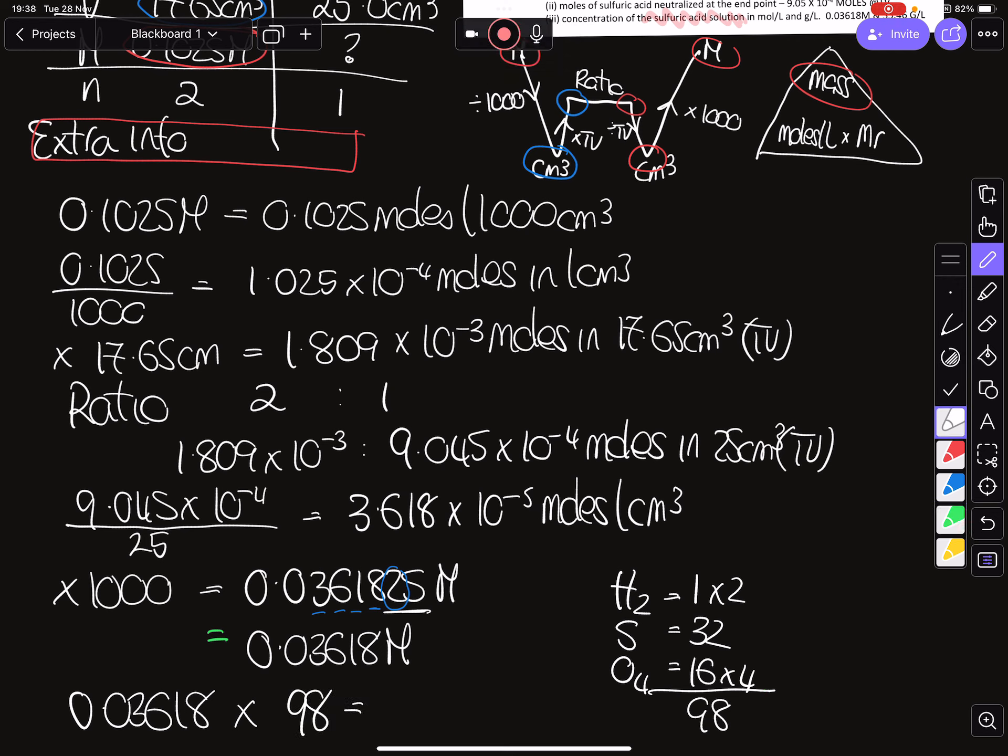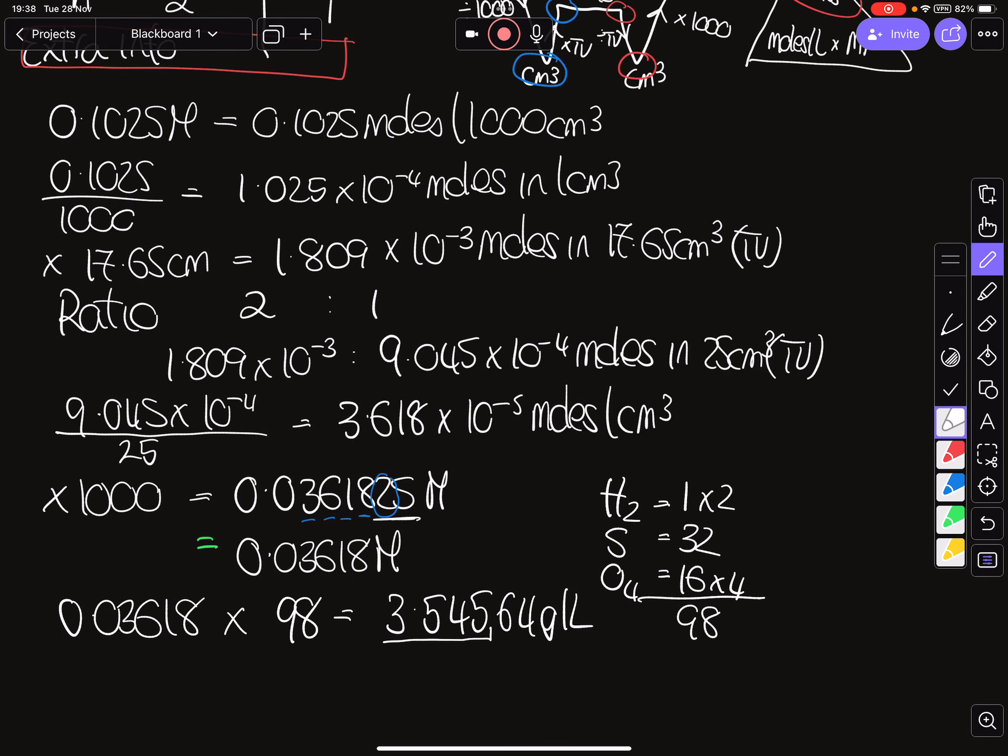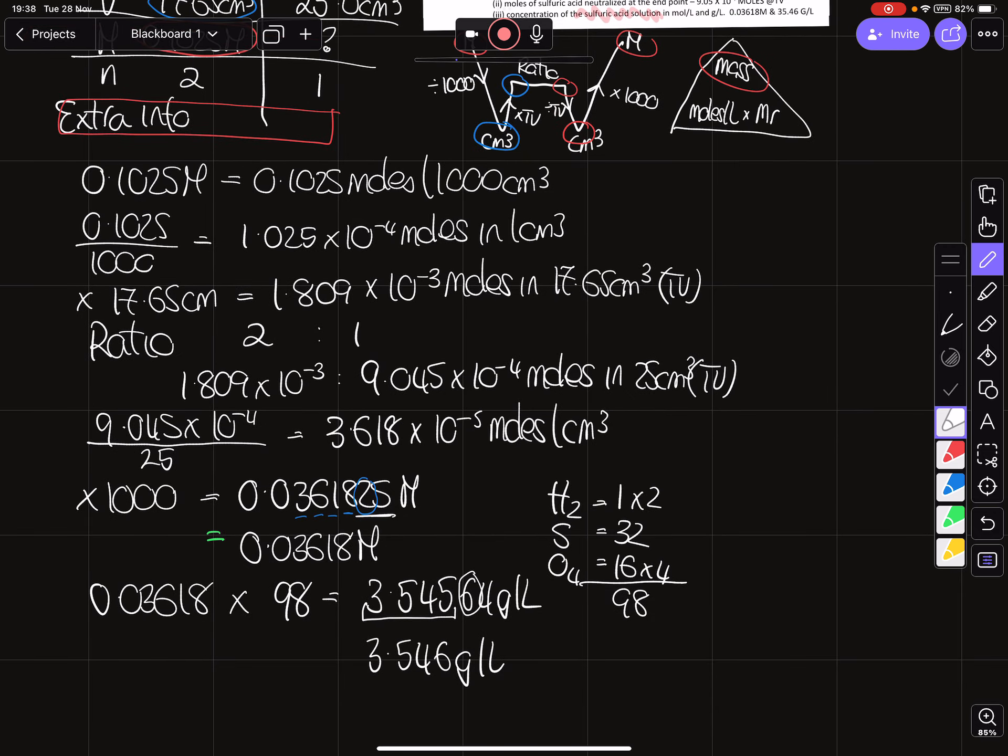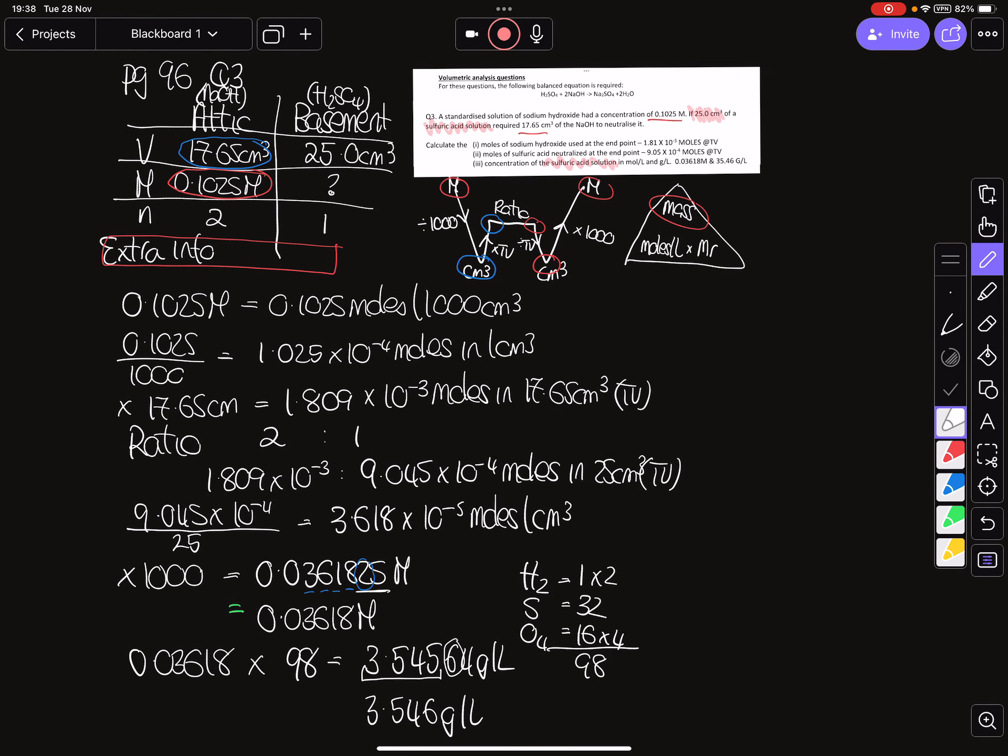So we finish this off: multiply by 98, 0.03618. When we do this, we end up with—again I'm going to show you everything—3.54564 grams in a liter. I can't leave it like that. I have to go to four significant figures. I look at my six here, and my six here will make my five round up, so 3.546 grams in a liter is where I'm going to end that part of my maths.